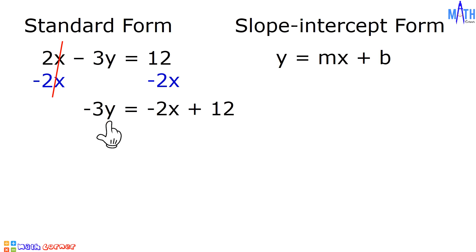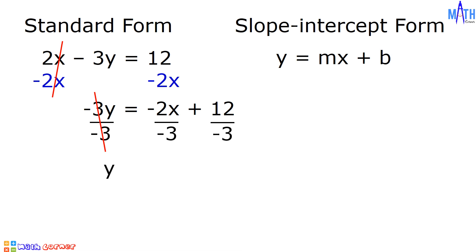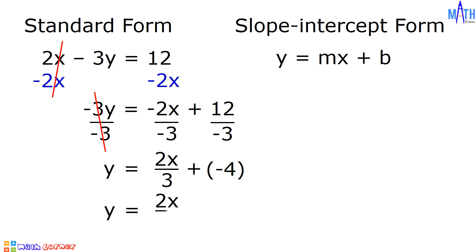To solve for Y, we need to divide both sides of the equation by negative 3. Negative 3y divided by negative 3 is equal to negative 2x divided by negative 3 plus 12 divided by negative 3. Let us simplify: negative 3y divided by negative 3 is equal to Y. Negative 2x divided by negative 3 is equal to 2x over 3, and 12 divided by negative 3 is equal to negative 4. So Y equals 2x over 3 minus 4, where M is equal to 2 over 3 and B is equal to negative 4.